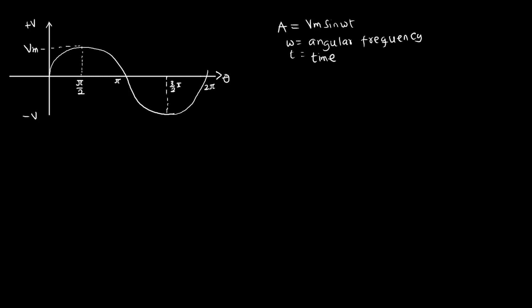I can write this expression in a different form. Angular frequency equals 2πf, measured in radians. So you can write the expression for the area as: area = Vm·sin(2πft), where Vm is the maximum voltage or the peak voltage.